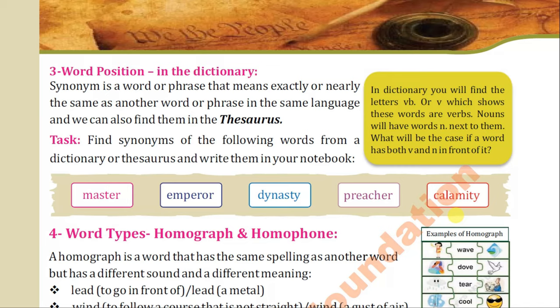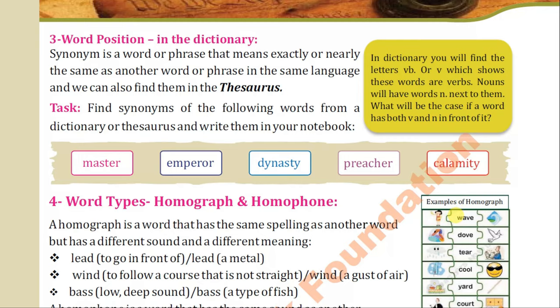The first word is 'ruler' — the synonym is master, monarch. The next word is 'emperor' — this is also ruler, master, monarch. The next word is 'dynasty' — dynasty means reign, period of time, and regime is also a synonym of dynasty. The next word is 'preacher' — preacher means priest, missionary.